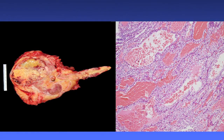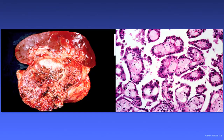Here's a clear cell, advanced stage gross photo with involvement of the renal vein — a high-grade lesion. If you look in these tumors enough, you'll see low-grade areas microscopically with a lot of lipid, classic features. Papillary friable tumors with papillary cores with foaming histiocytes are fairly easy to recognize.